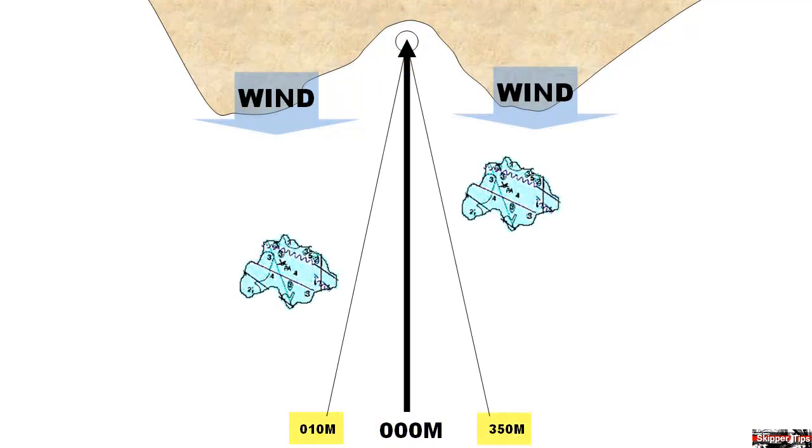Next you want to plot two lines called limit lines which will keep you within 10 to 15 degrees of your sailing course. We have one limit line of zero one zero degrees magnetic and the other of three five zero degrees magnetic.